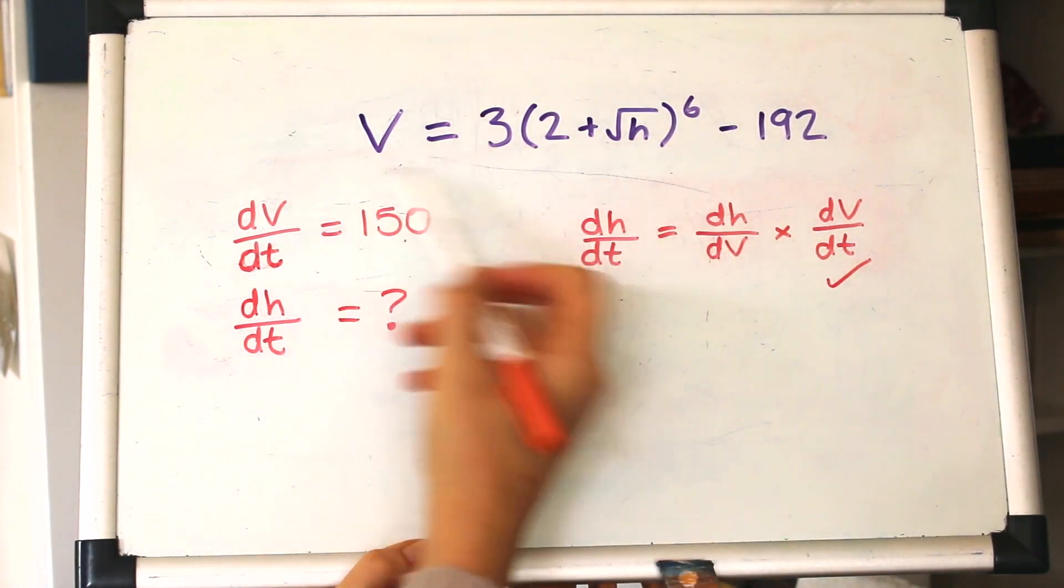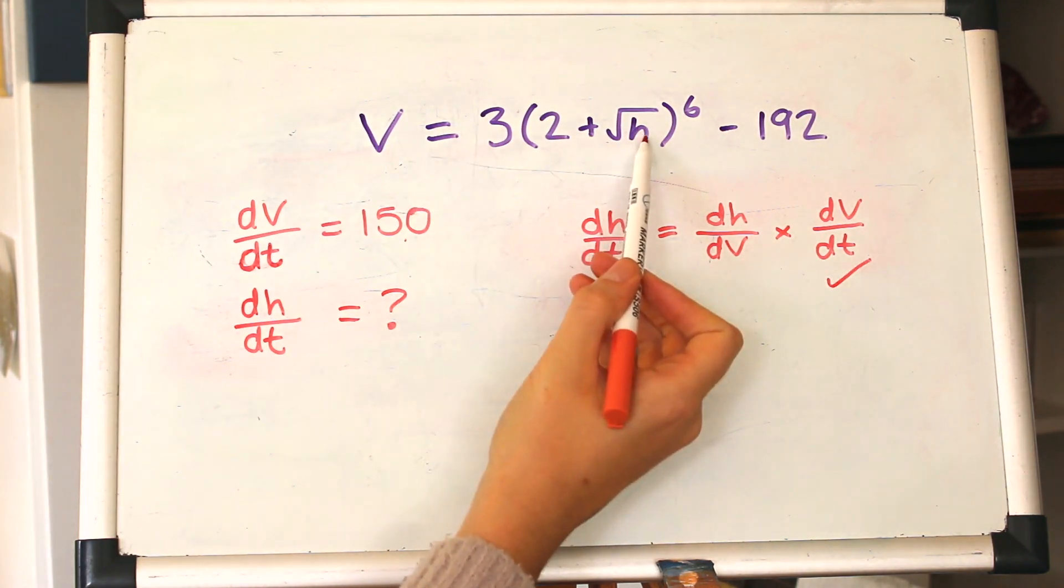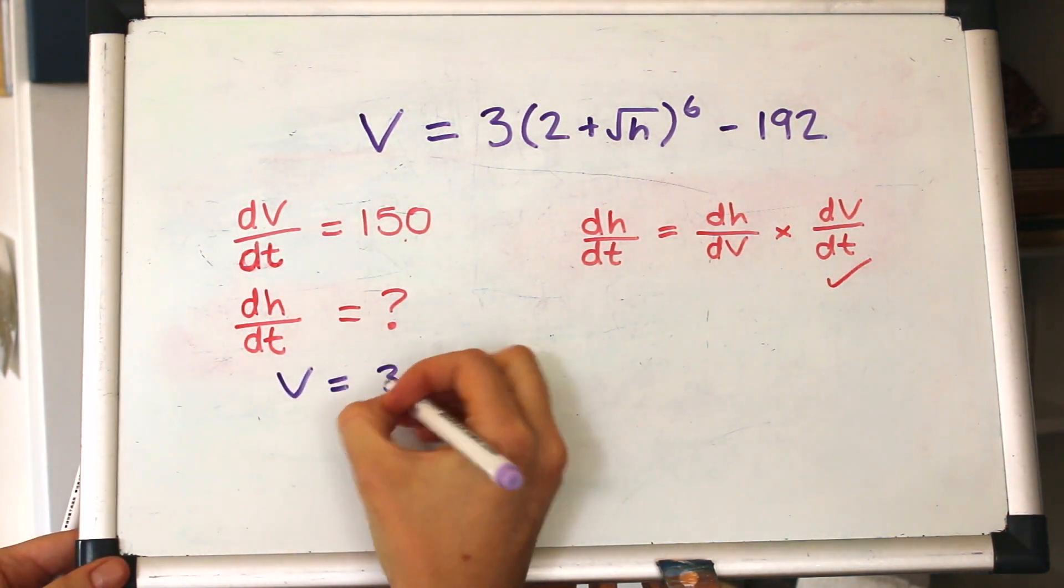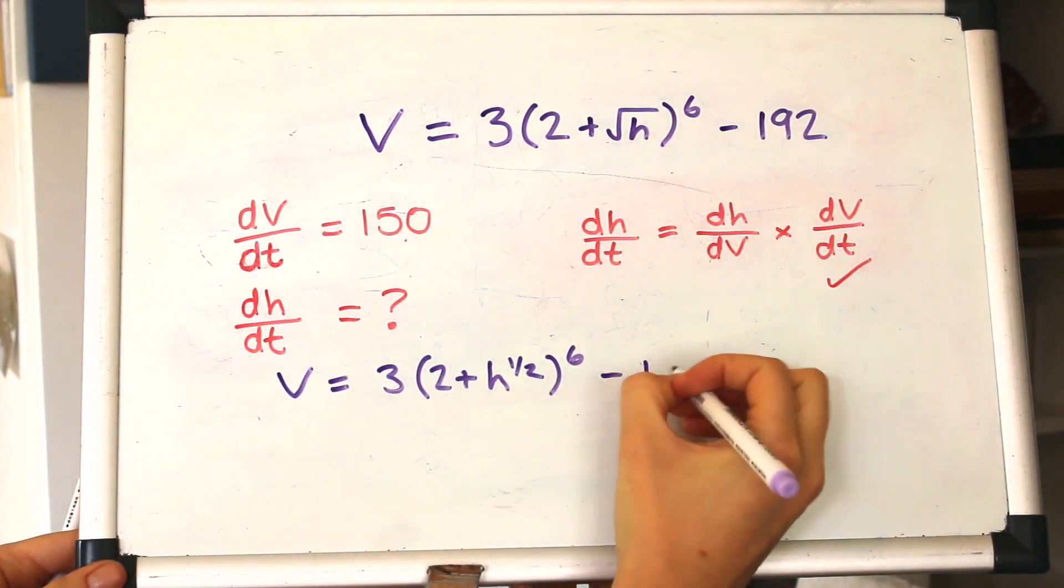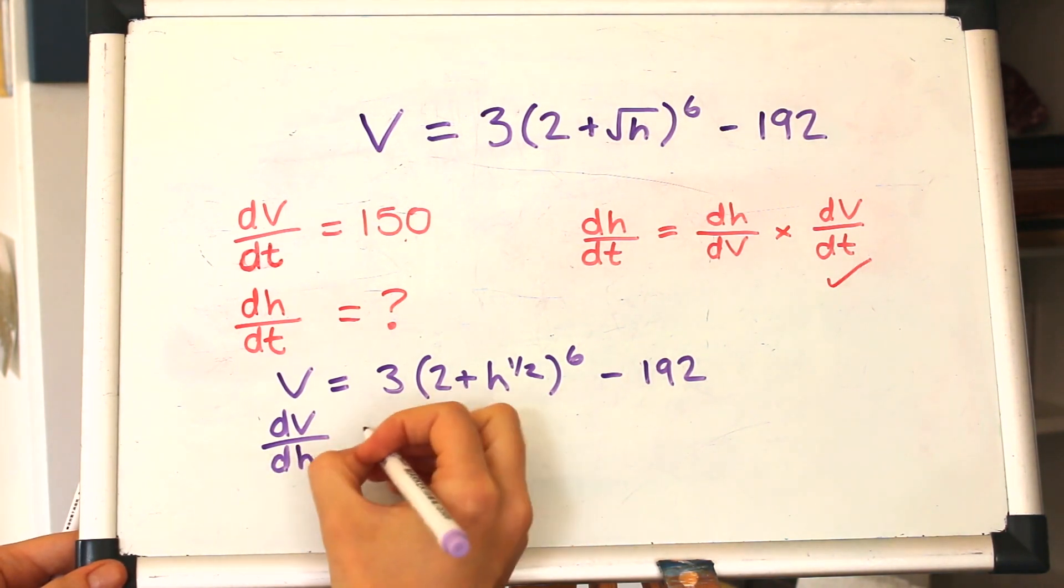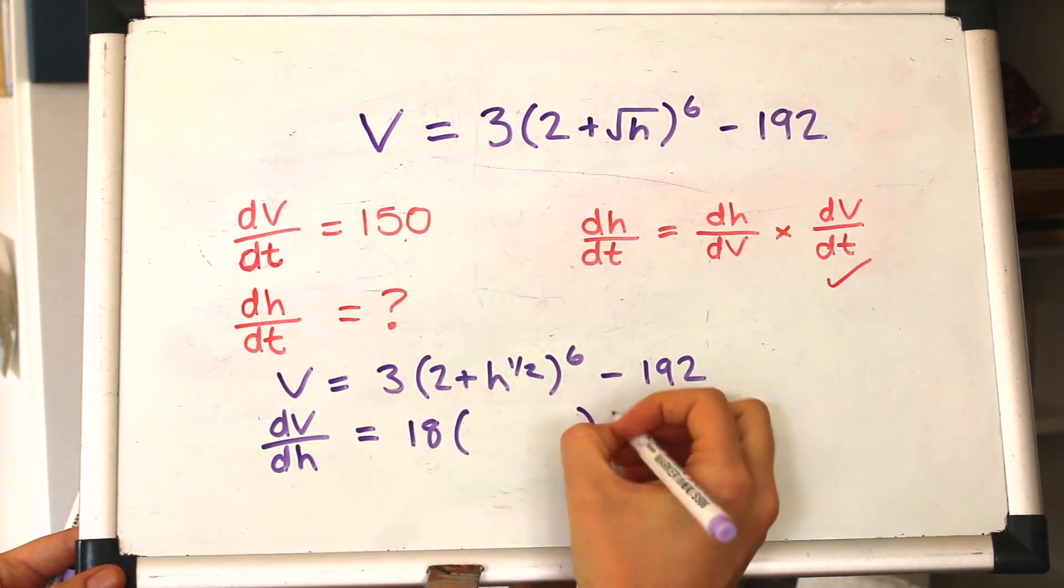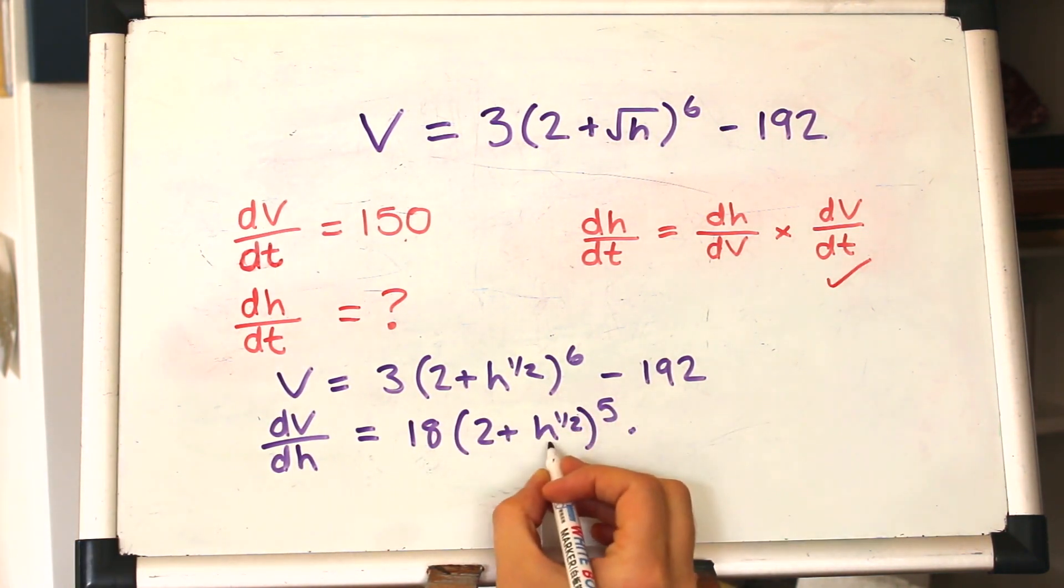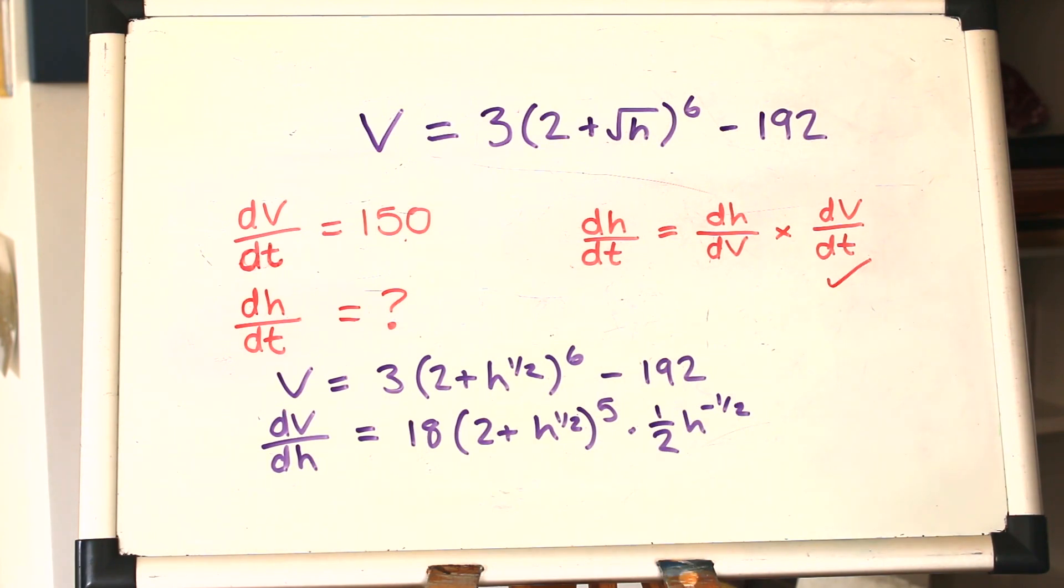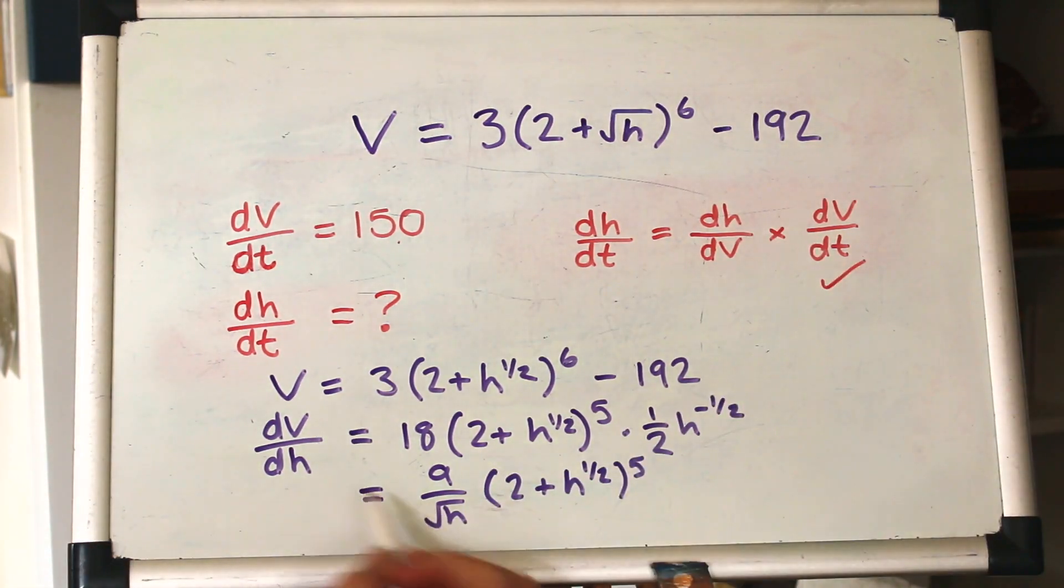So looking at the equation that we're given here, obviously we're going to use that, because that's the information we've been given, and that, if we differentiate it, will give us dV by dH, so that's the reciprocal of that one there. So let's now differentiate that equation. I'm just rewriting that H with the power of a half, so it's easier to differentiate, and this, when we differentiate it, dV by dH, that will be a chain rule type differentiation, so we've got to differentiate the outside, and multiply by the derivative of the inside, so that will be a half, h to the minus a half. Minus 192 will vanish, and let's just neaten that up a little. Okay, so that gives us dV by dH.